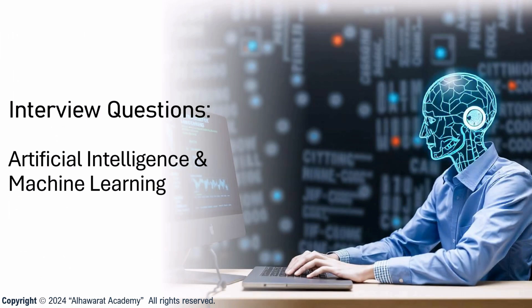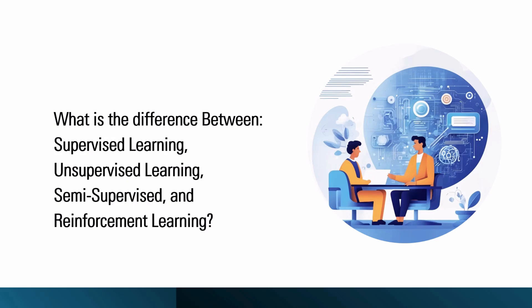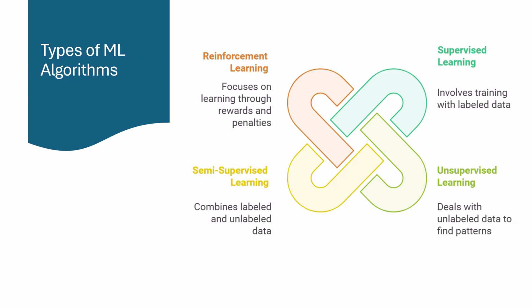Welcome to our interview questions series. Today we're exploring another fascinating question in the field of artificial intelligence: what is the difference between supervised learning, unsupervised learning, semi-supervised, and reinforcement learning? We'll consider the four main types of machine learning algorithms — each type has unique characteristics and applications, so let's break them down in detail.